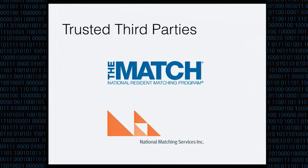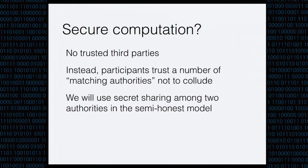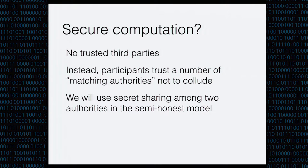We propose to replace trusted third parties with secure computations. Instead of sending your data to some person out in the void, you delegate the match to some number of matching authorities who are trusted only not to collude. For our particular research, we're going to use secret sharing among two authorities in the semi-honest model, so we're additionally going to trust them to perform the algorithm faithfully. This is relatively well in line with most of the previous work on the subject.